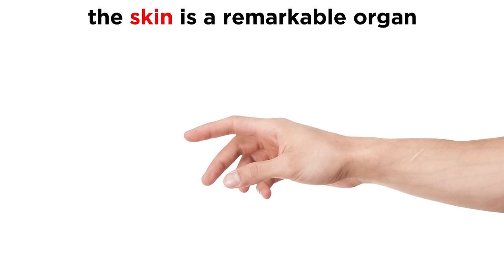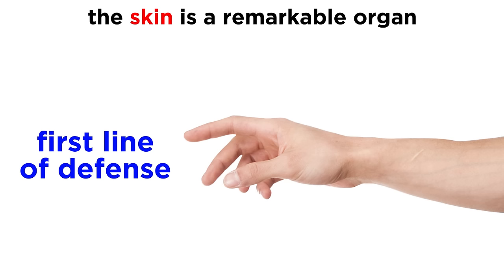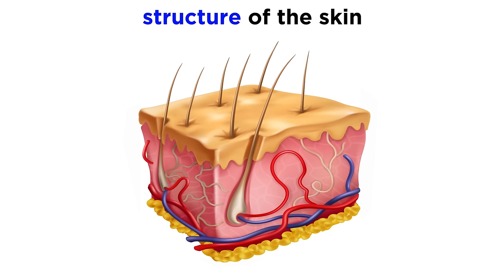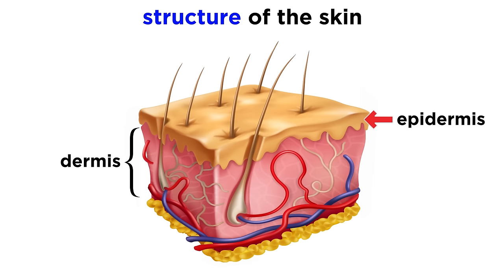The skin is a remarkable organ, acting as the first line of defense from the elements that surround us. It keeps bacteria out and water and heat in. Our skin is made of two regions: a thin outer layer, which is the epidermis, and a thicker inner layer, called the dermis.